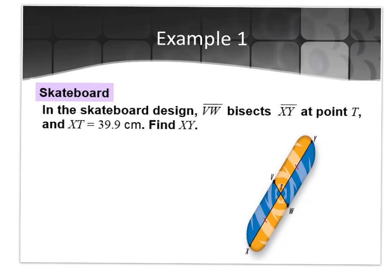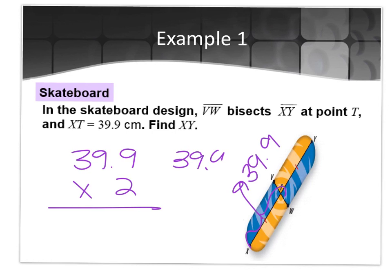Okay. So this example gives you the picture of a skateboard. It says in the skateboard design, segment VW bisects segment XY at point T, and XT is 39.9 centimeters. So if XT, which goes from here to here, is 39.9 centimeters, it wants you to find XY. There's two ways to do it, right? What's one way? Multiply it by two, right? Because it's doubled, right? The other way would be? Add it. 39.9 plus 39.9. Either way. So you see the little congruency marks were there too. So even if it didn't tell you that it bisected it, you would know from the congruency marks.